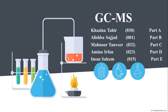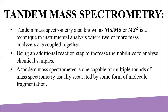Moving on to our first point: tandem mass spectrometry. Tandem mass spectrometry, also known as MS-MS, is a technique in instrumental analysis where two or more mass analyzers are coupled together, using an additional reaction step to increase their abilities to analyze chemical samples. A tandem mass spectrometer is capable of multiple rounds of mass spectrometry, usually separated by some form of molecule fragmentation.